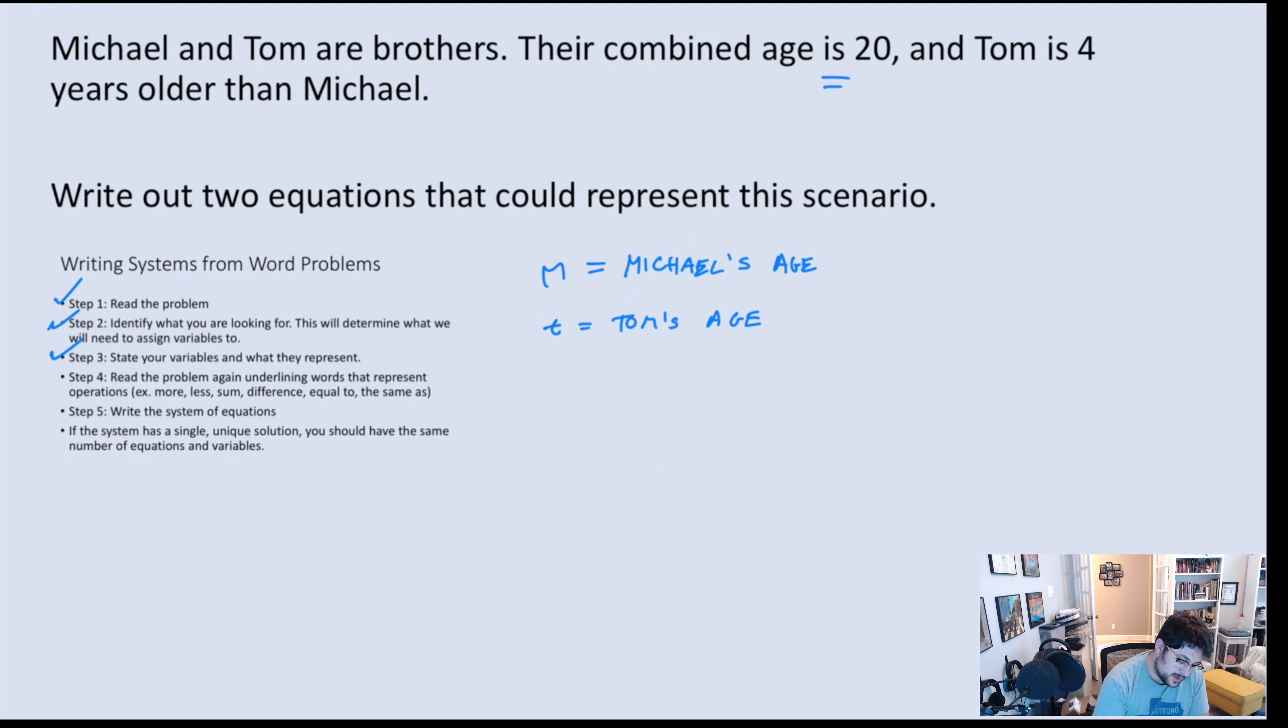The first thing that we're looking for is something that says 'is'. Is means equal sign. So combined age is 20. Tom is four years older than Michael. Let's first start with combined age. If we're combining ages, what are we doing with the ages? Well, we're adding. So Michael plus Tom is 20, equals 20. Next thing. Tom is four years older than Michael. So Tom is T equals four years older than Michael. Well, if I take four plus Michael's age, that probably gives me Tom's age because he's four years older. Now we have two equations. This is what we're trying to set up. And now we have something that we could solve.